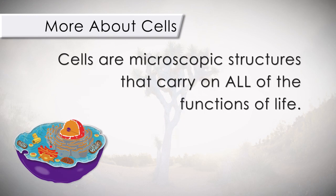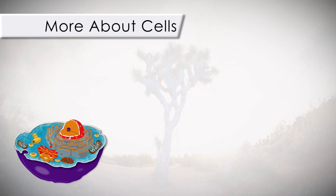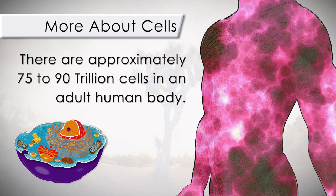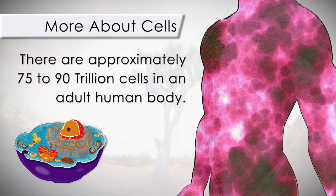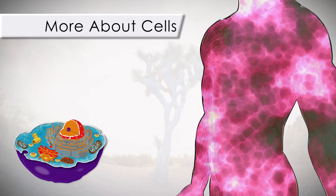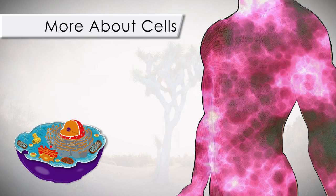Cells are microscopic structures that carry on all the functions of life. In fact, an adult human body is composed of approximately 75 to 90 trillion cells. That's amazing. And what's even more amazing is that within each of these six basic functions, there is a host of up to a million supporting chemical exchanges that need to occur within each cell and with one another in order to sustain life. Let's give our bodies the credit they deserve — we don't even have to think about it; it does it all on its own.